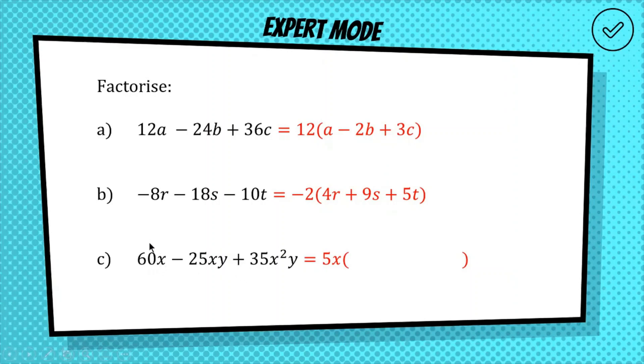Okay, 5x taken out of 60x leaves us with 12 because 5 times 12 is 60. We're going to have, factored out of here, we're going to have minus 5y. We've divided out the x and 25, or negative 25, divided by 5 is going to be minus 5. And then for this last term, if we divide 5x out, well, 35 divided by 5 will be 7. x squared divided by x leaves us with x and you've still got the y there. So if you manage to figure out that this one is 5x outside of 12 minus 5y plus 7xy, you are an absolute genius and you're killing this.